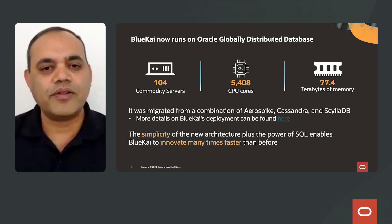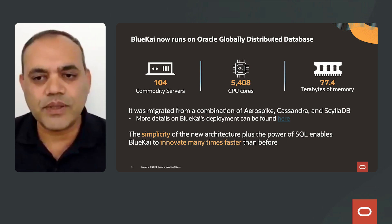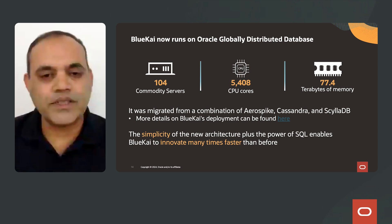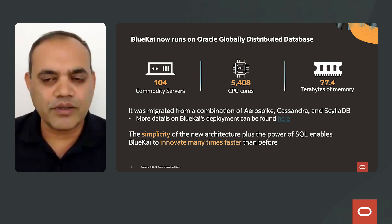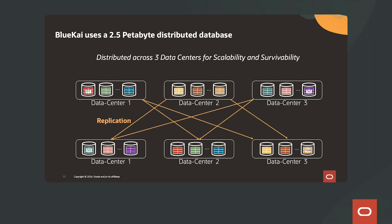Blue Kai was migrated from a combination of NoSQL products like Aerospike, Cassandra, and SolaDB. The simplicity of the new architecture plus the power of SQL enables Blue Kai to innovate many times faster than before. The total data volume is 2.5 petabytes distributed across multiple data centers. Each shard in a data center has a replica in a different data center, enabling Blue Kai to survive an outage of an entire data center.